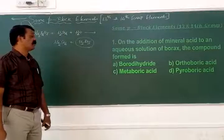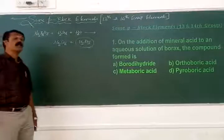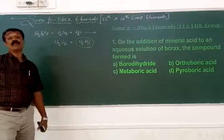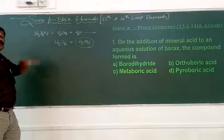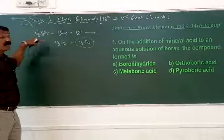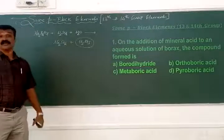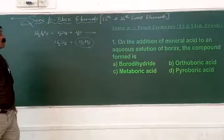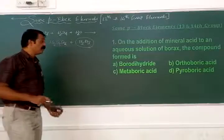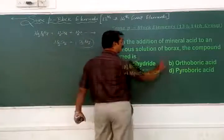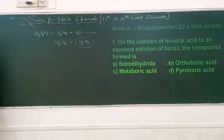Orthoboric acid (H₃BO₃) is neither metaboric acid nor pyroboric acid. Metaboric acid is HBO₂, and pyroboric acid is H₂B₄O₇ — which is essentially the borax structure with H₂ replacing Na₂. If it is a borate, it is called metaboric acid. The product of this first reaction is orthoboric acid.